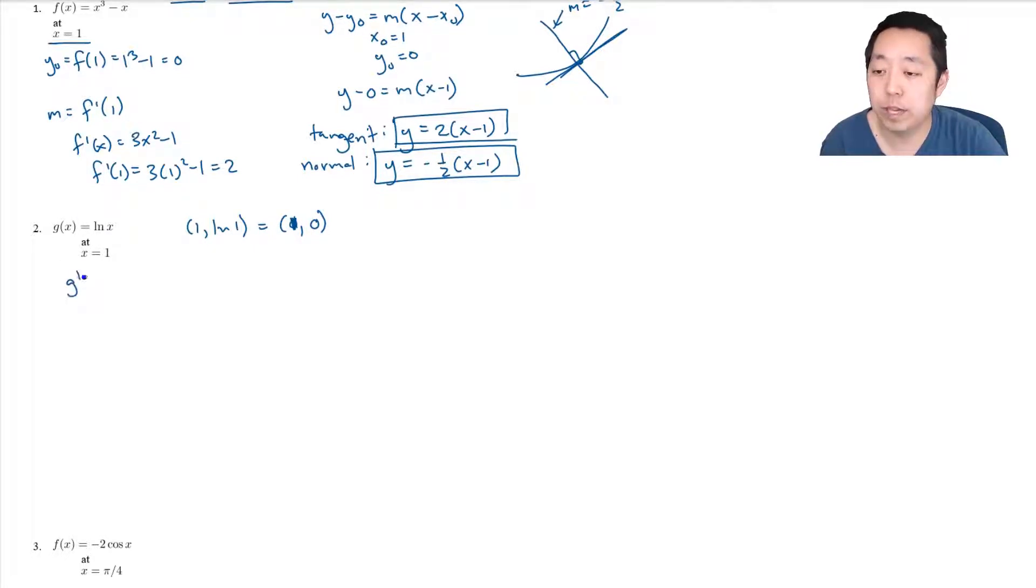So g prime of x, to find the slope, the derivative is 1 over x, so the derivative at 1 equals 1. My equation for my line is going to be y minus 0 equals m times (x minus 1), just like it was in the previous problem. For the tangent line, the slope is 1, so it's y equals x minus 1. That's the tangent, and the normal line has a slope of negative reciprocal, which would be negative 1, so that's y equals negative (x minus 1).